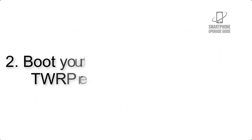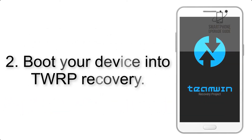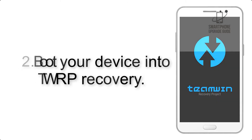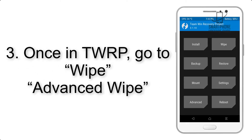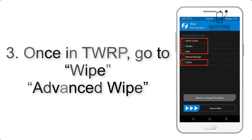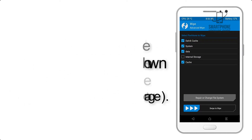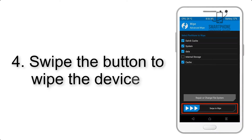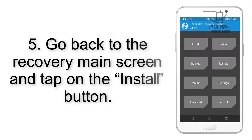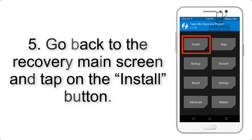Step 2: Boot your device into TWRP recovery. Once in TWRP, click on Wipe, then Advanced Wipe, and select the checkboxes as shown in the image, excluding internal storage. Step 4: Swipe the button to wipe the device.